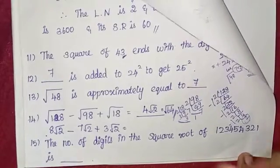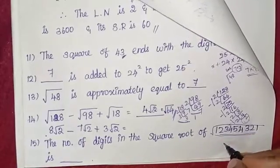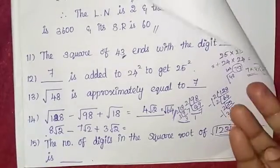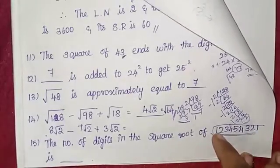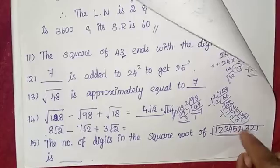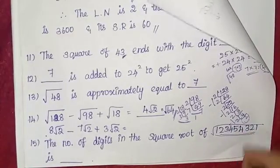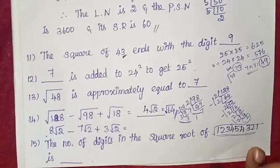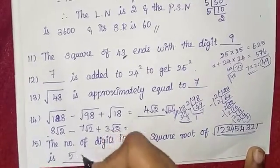The number of digits in the square root of this number. The number has 9 digits: 1, 2, 3, 4, 5, 6, 7, 8, 9. Using the formula, 10 divided by 2 equals 5. So the answer is 5.